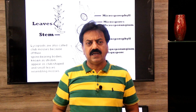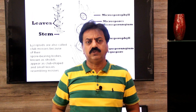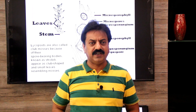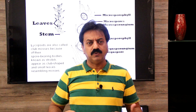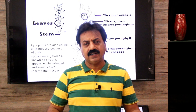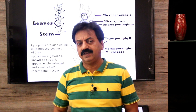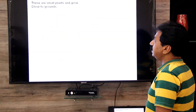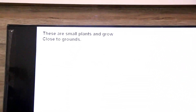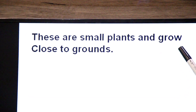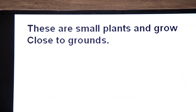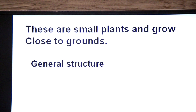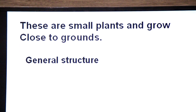In Lycopsida as well, as with other vascular plants, the dominant generation is the sporophyte. So first we will study the characteristics of the sporophyte. These are small plants that grow very close to the ground.